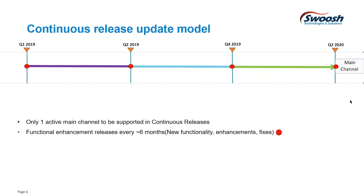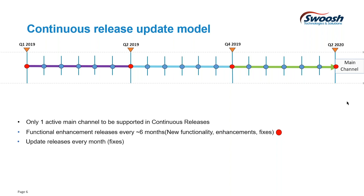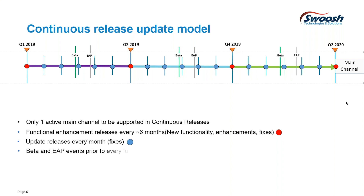Every six months they'll come out with a breakpoint, similar to NX10, NX11, NX12 — and you have all the different patches in between. Then as you move along in that six months, you get those patches. That's pretty similar to how the channel is working.